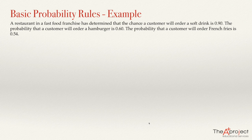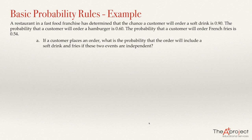The first question is this: if a customer places an order, what is the probability that the order will include a soft drink and fries, if these two events are independent?